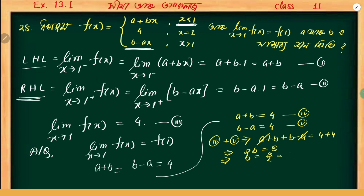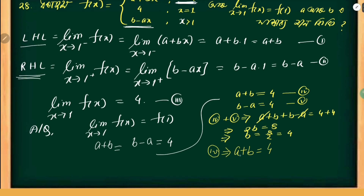From 2b equals 8, we get b equals 8 divided by 2, that means b is equal to 4. Substituting b equals 4 back into a plus b equals 4: a plus 4 equals 4, so a equals 4 minus 4, that means a is equal to 0. Therefore a equals 0 and b equals 4.